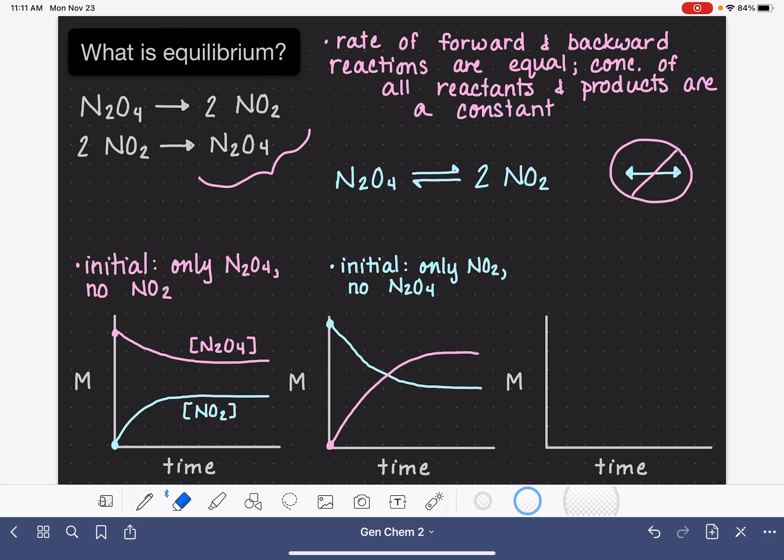Now what I'm attempting to show here, and I didn't do a great job with the NO2 line, is that these concentrations are moving themselves to roughly the same place. They should be moving themselves to exactly the same place as what we saw in this first scenario. So our NO2 concentration is going to drop quite a bit, and our N2O4 concentration is going to go up quite a bit to get to that point where the concentrations are constant.